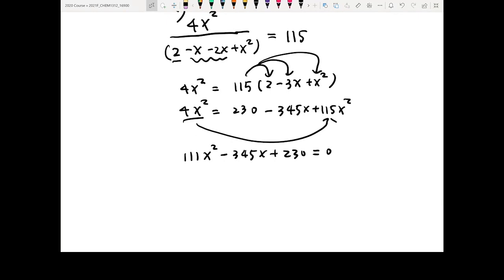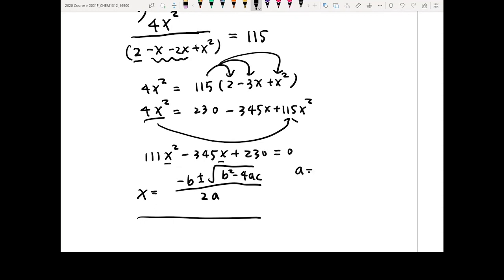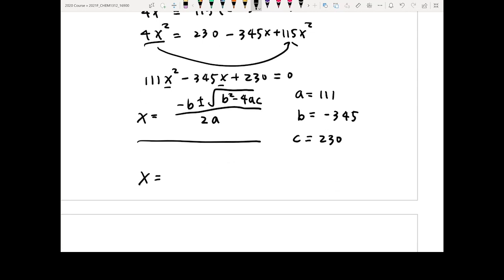Then we can actually use the equations. Once you see these second-order polynomial equations, we know you can solve for your X. X is going to equal to... So this is actually the equation I provide in the handout sheet. So this equation I'm going to use where the A is going to equal to 111, B is going to equal to negative 345, and C is 230. When you solve this, you're going to get two numbers. One is going to equal to 2.14 or 0.9684, which number is actually the correct number.